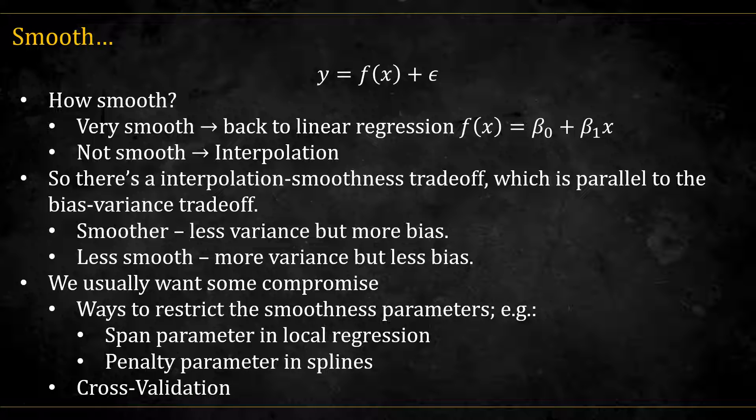For example, the span parameter in local regression, or the penalty parameter in splines. You can see here the objective function we use in splines. The first term is the residual sum of squares. Minimizing this pushes for interpolation. But the second term,